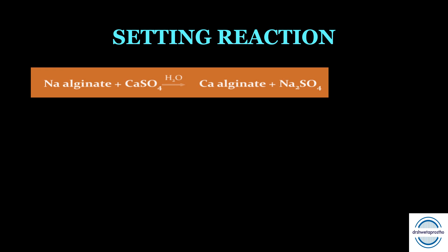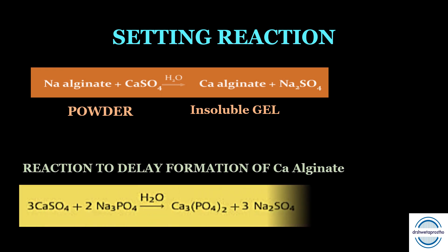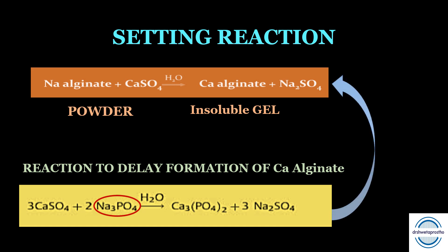Setting reaction of alginate: when alginate powder is mixed with water, sodium alginate reacts with calcium sulfate to form an insoluble gel — calcium alginate. This sol-to-gel conversion occurs by chemical reaction, but the reaction is very fast, so we don't get enough working time. Therefore the reaction is delayed by the retarder trisodium phosphate — calcium sulfate reacts with the retarder first, and once the retarder is exhausted, the main reaction takes place: sodium alginate with calcium sulfate forms insoluble calcium alginate gel. This gives us enough working time to make the impression.